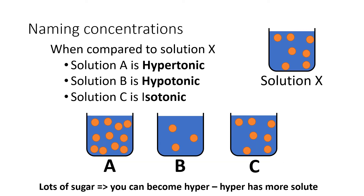We also have a couple of new bits of terminology — you have to learn the terminology, spell these words correctly, and know what they mean, because they're the words on the mark scheme. Compared to solution X, we say solution A is hypertonic. I use the analogy that if you give someone lots and lots of sugar, they can become a bit hyper — and hyper means they've got more solute. Hypertonic solutions have more solute.